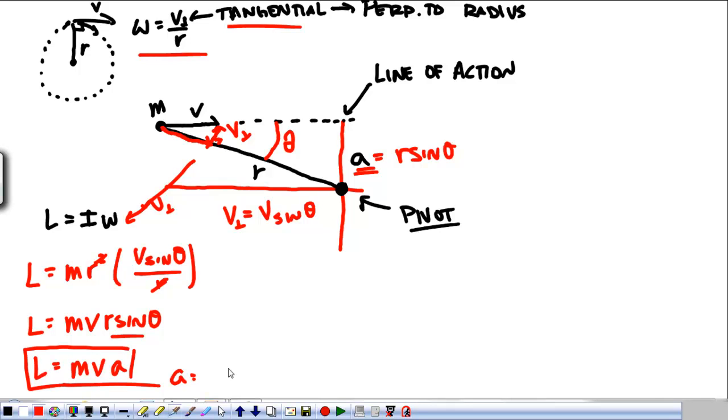Where A is the distance between the line of action from the pivot to the line of action? Okay. That's one way that we can go about thinking of it. The other way is a definition you may or may not have already found in your book, where it says angular momentum is equal to R cross P.